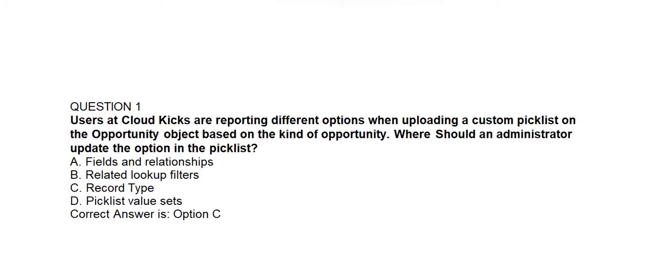Question number one. Users at Cloud Kicks are reporting different options when uploading a custom picklist on the opportunity object based on the kind of opportunity. Where should an administrator update the option in the picklist? Option A: Fields and Relationships. Option B: Related Lookup Filters. Option C: Record Type. Option D: Picklist Value Sets. Correct answer is Option C: Record Type.